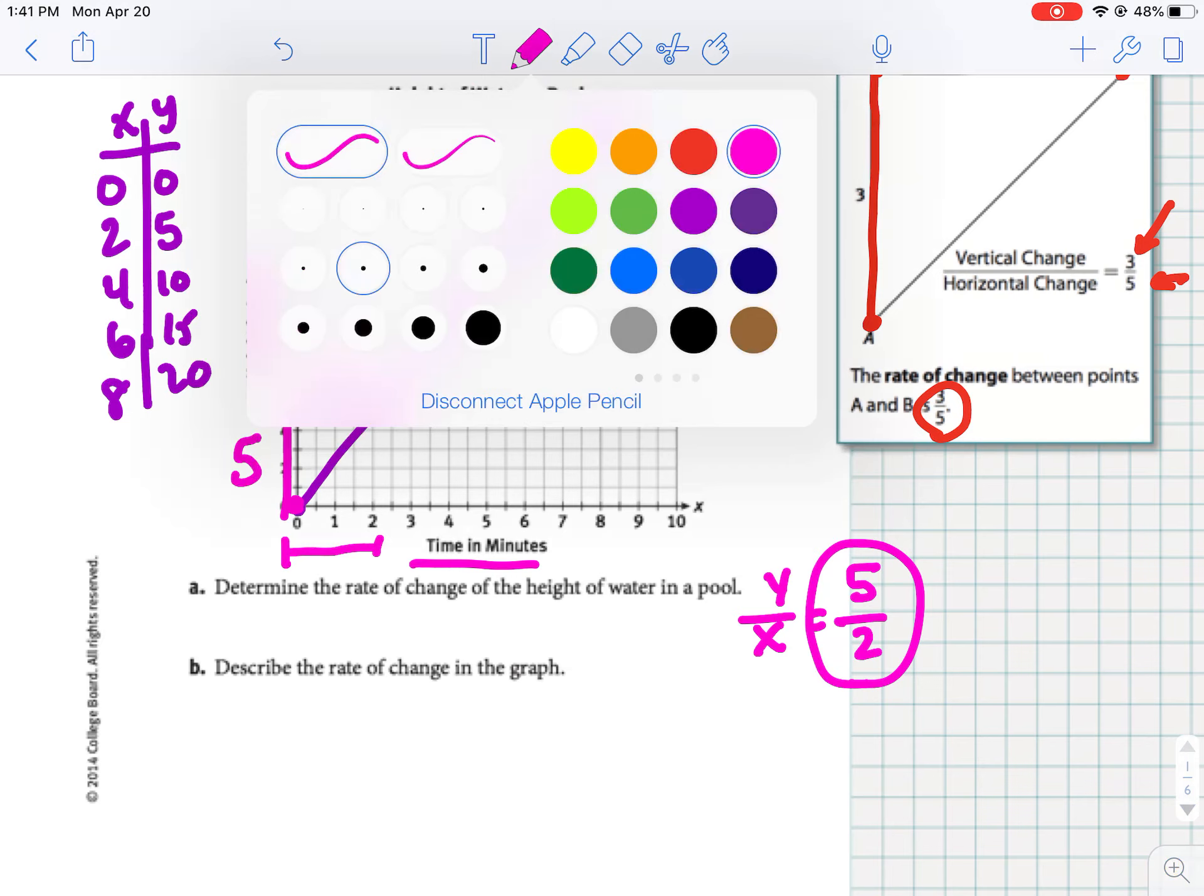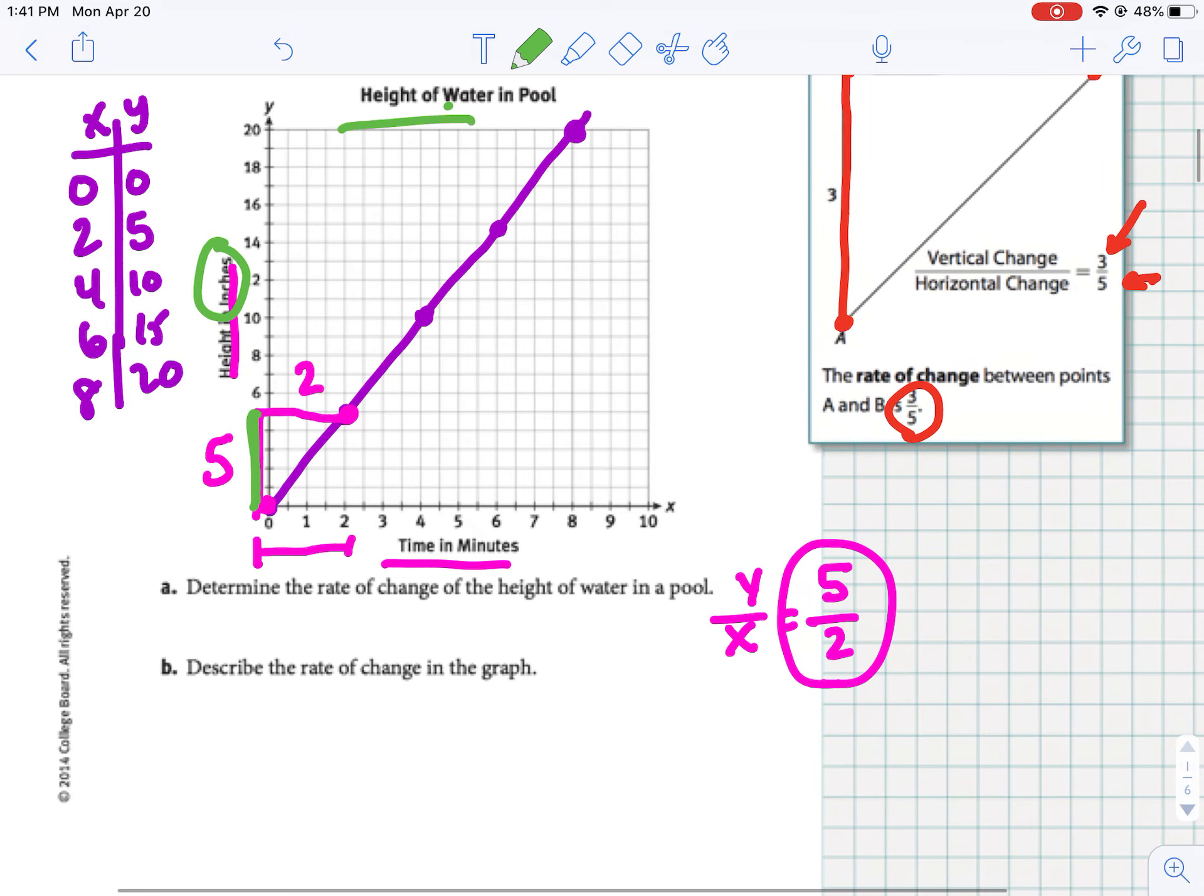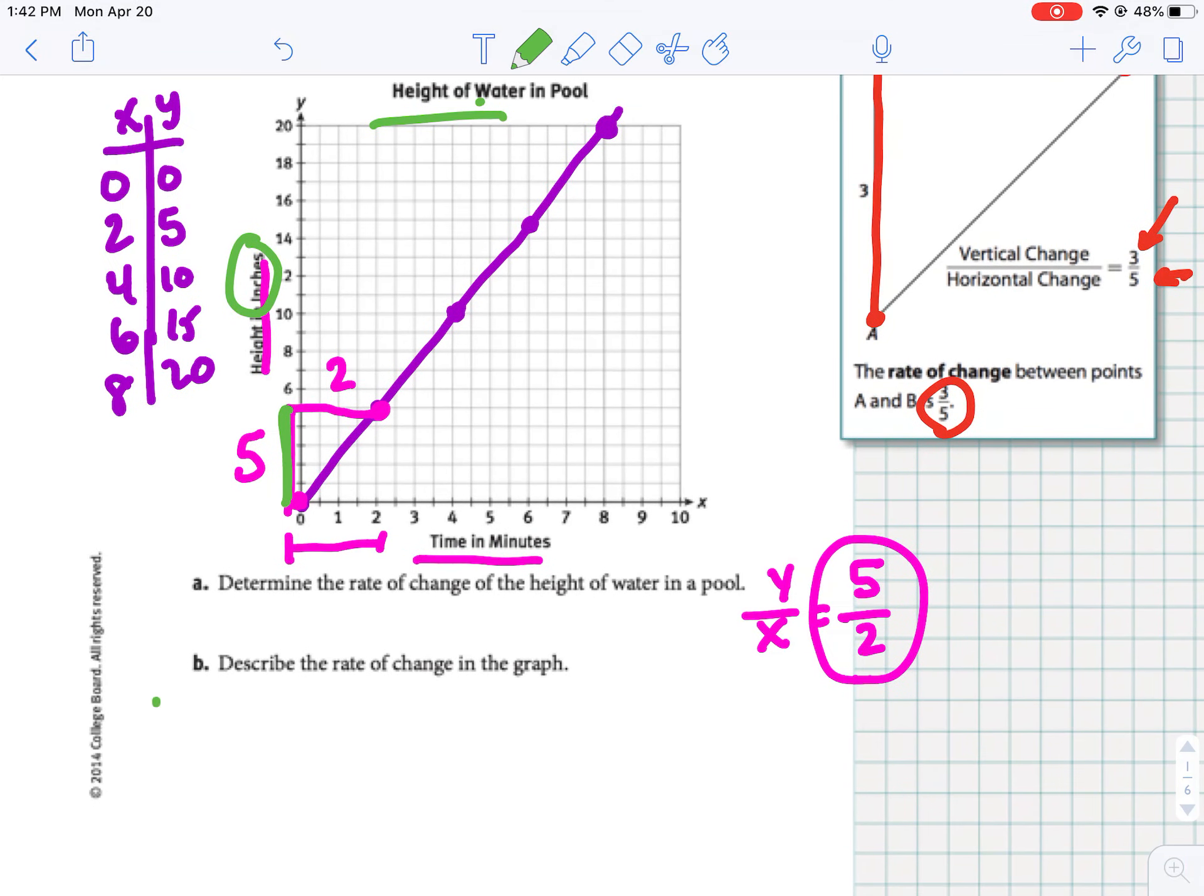Now it says describe the rate of change. So this is what some of you have struggled with in the past. We've got to use words. So it didn't just go up 5, it went up 5 inches. And what went up 5 inches? The height of the water, right? So we could say the height of the water went up 5 inches. And how long did it take? The time is in minutes. So we went over 2. So we could say it went up 5 inches in 2 minutes.